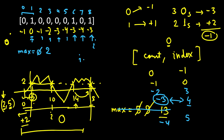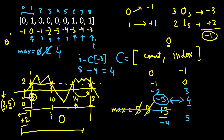Then at index 8 we see minus 3 again. It exists in the map at index 4. So 8 minus 4 equals 4, which is larger than existing max of 2, so we update max to 4. We've reached the end, so the answer for this example is 4. The balanced subarray is the segment where both running counts are minus 3 — we just return the count, not the actual array.